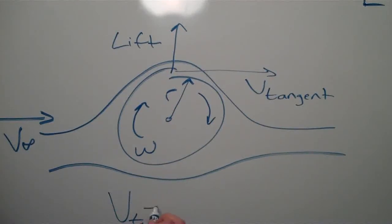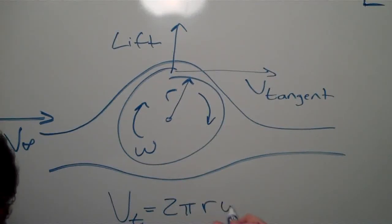Given the radius and angular velocity of the cylinder, we can find the tangential velocity of the edge of the cylinder.